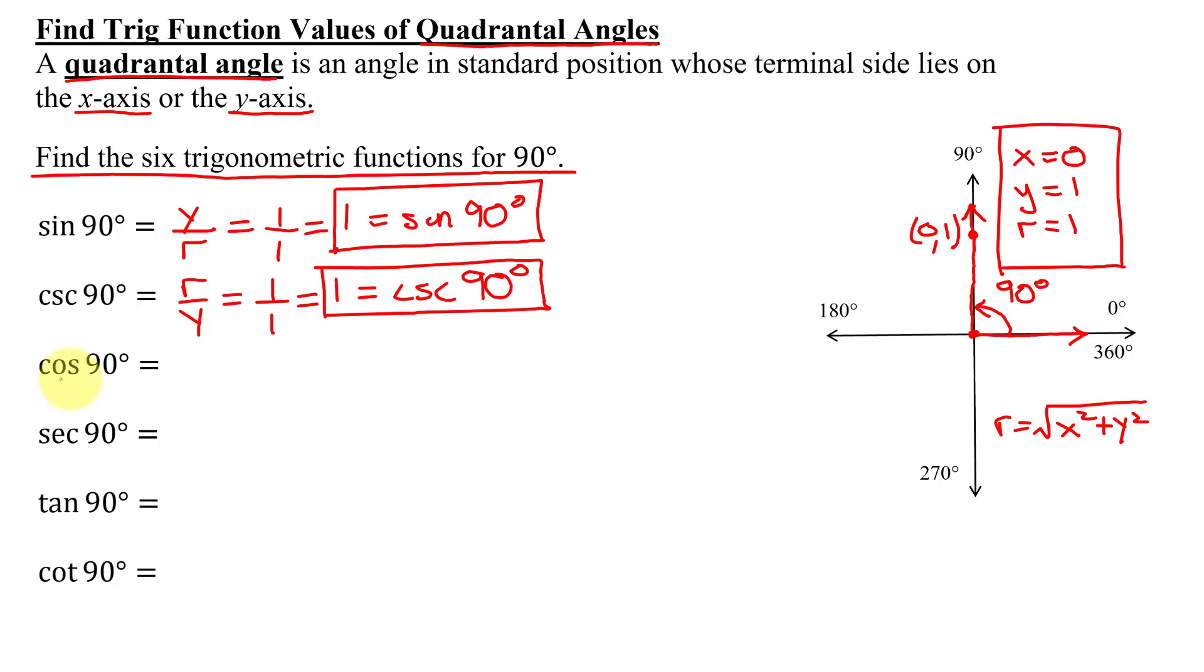Next is the cosine of 90 degrees. Defined in terms of x, y, and r, it's x over r. x was 0, r was 1, 0 divided by 1 is 0. So the cosine of 90 degrees equals 0.